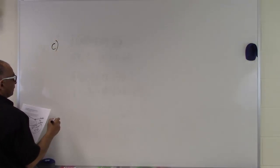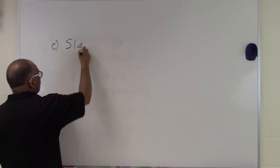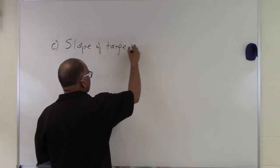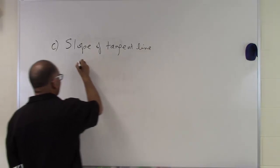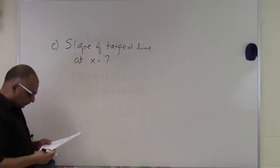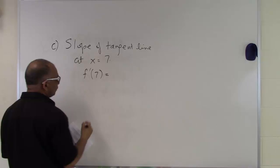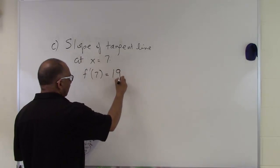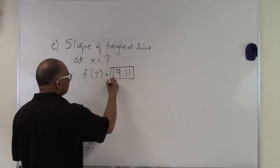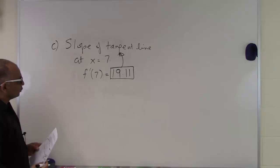Part C asks us to find the slope of the tangent line at x = 7. Since we just found that the value of the derivative at 7 is 19.11, that itself is the slope of the tangent line at x = 7.